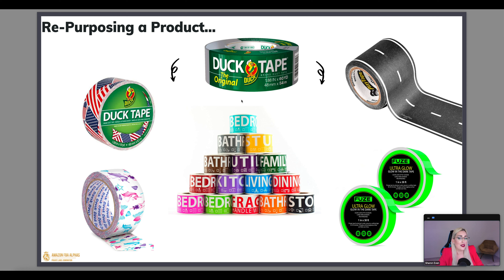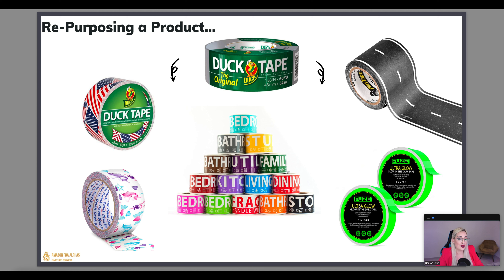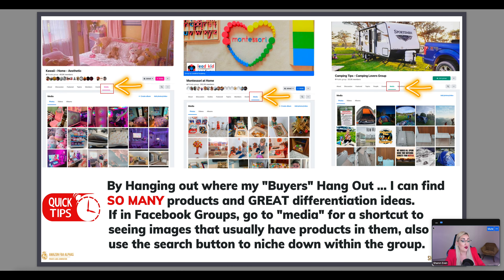Another example of repurposing: duct tape already exists, but the minute you make a masking tape look like a road, you're now selling a product for little boys or girls to make roads on the ground to play with toy cars. Or add some glow-in-the-dark powder to it and you've got glow-in-the-dark tape. Or write 'bedroom, bathroom, family room, living room' on it and you've made duct tape for people moving house to label their boxes. Taking a product that exists, changing what's written or printed on it, and focusing on a different buyer avatar.